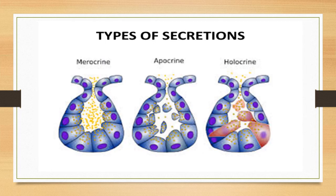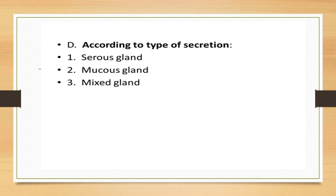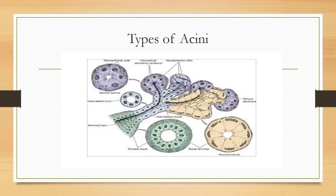According to their mode or mechanism of secretion, there are three varieties of glands: merocrine, apocrine, and holocrine. According to the nature of the secretion, there are also three varieties: serous glands, mucous glands, and mixed type glands. The consistency of the secretion can be serous, mucous, or mixed, and there are different types of acini to secrete each of these three types of secretion.